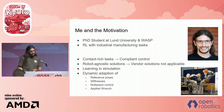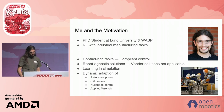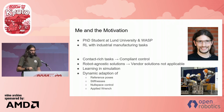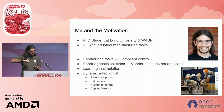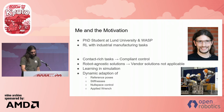We want to do contact-rich tasks, so compliant control is a natural solution. We also want to work with robot agnostic solutions. We want to be able to do learning in simulation. And to solve our tasks, we need to dynamically adapt reference poses, change the stiffness of the robot arm, do null space control like control the elbow, and apply forces on the environment.